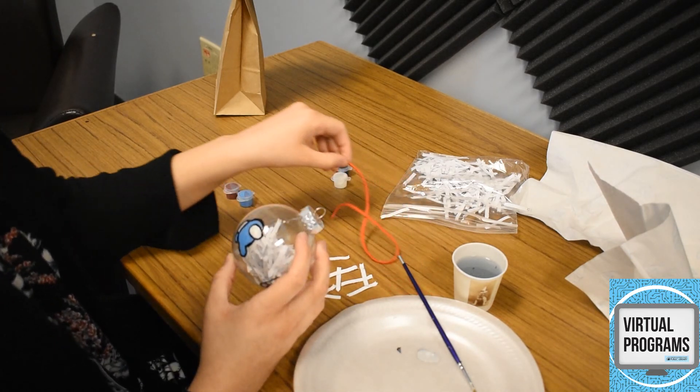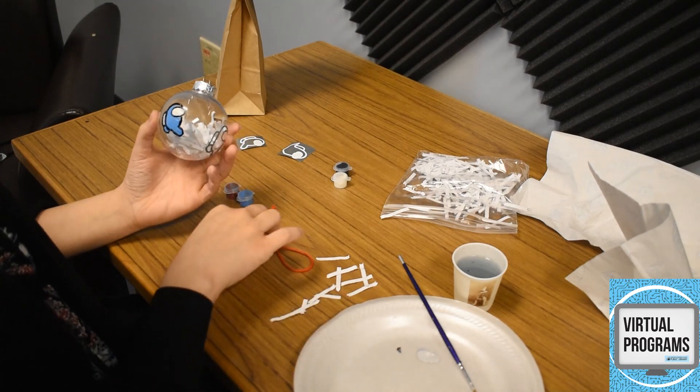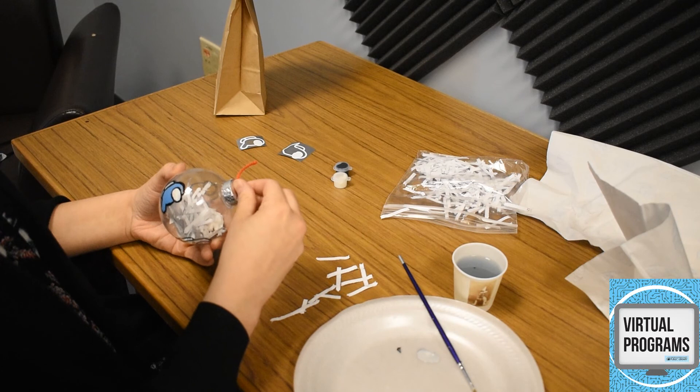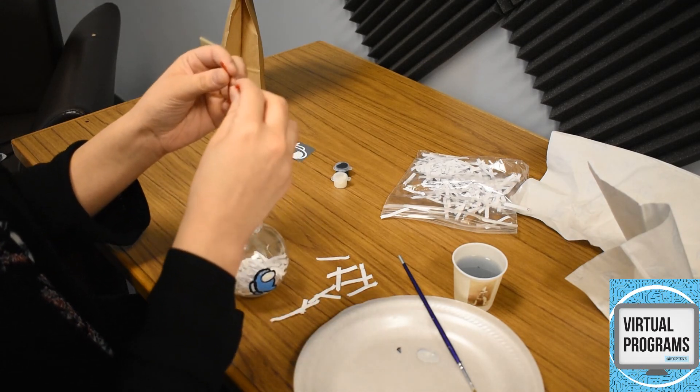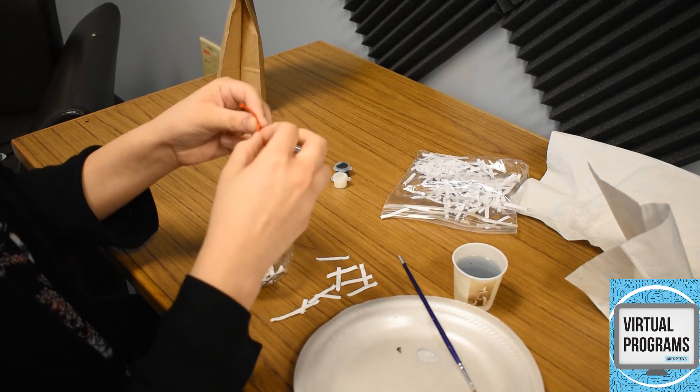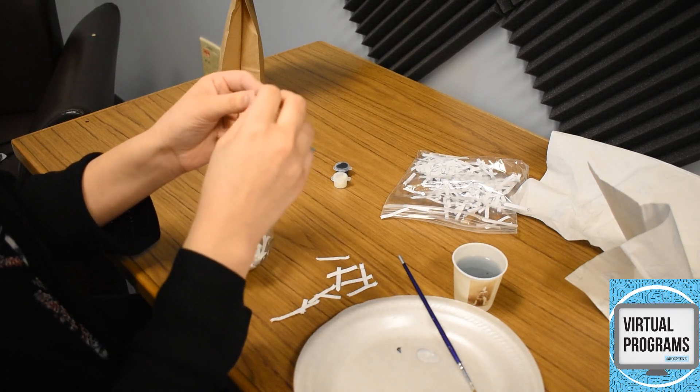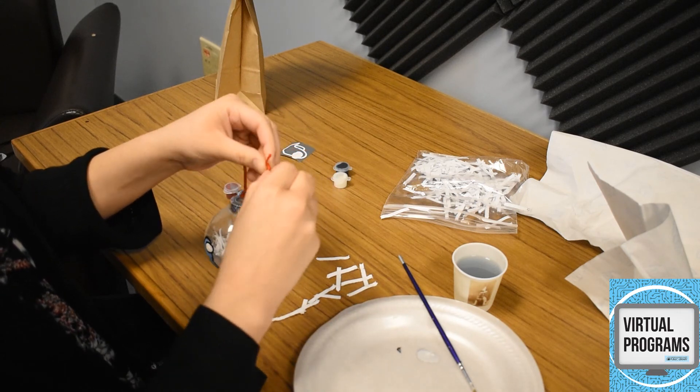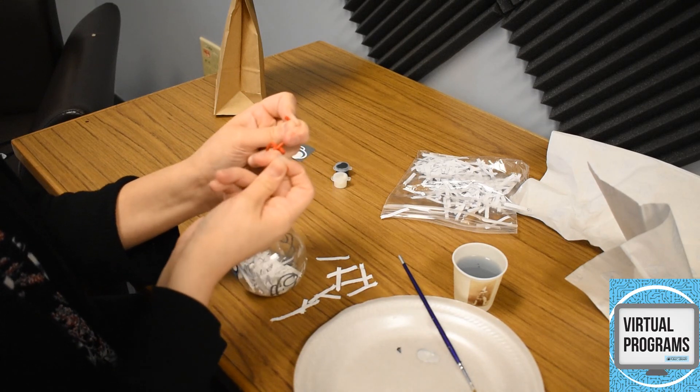And then our last thing we're going to do is we're going to put our string on. So we're going to just loop it through, bring it up, and make a small knot right here. But we don't want to bring it all the way down, just a little bit down. And then we'll fold it in, make a second knot, and pull that tight.